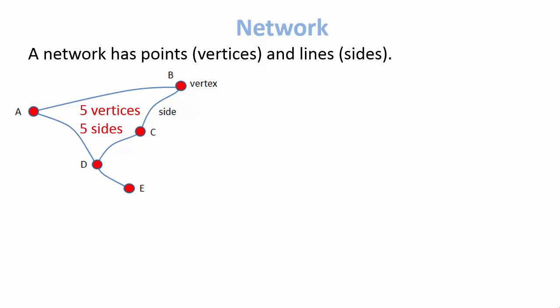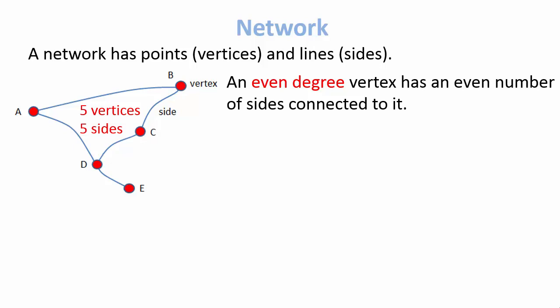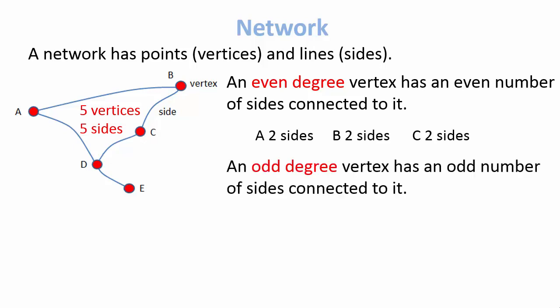An important definition: if a vertex, which is the singular for vertices, has an even number of lines connected to it, then we say it is an even degree vertex. Are there any of those in our diagram? Yes, there are three of them: vertex A, vertex B, and vertex C. Each of those has two lines connected to it. Similarly, an odd degree vertex has an odd number of sides connected to it, and there are two of those in our network: vertex D and vertex E.